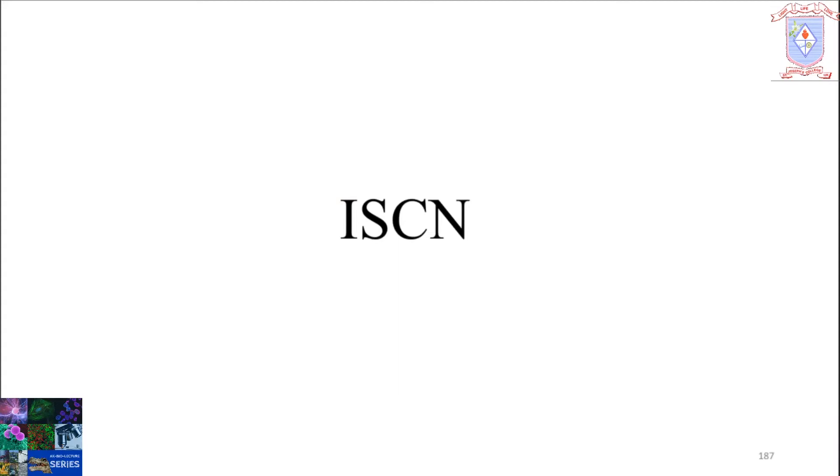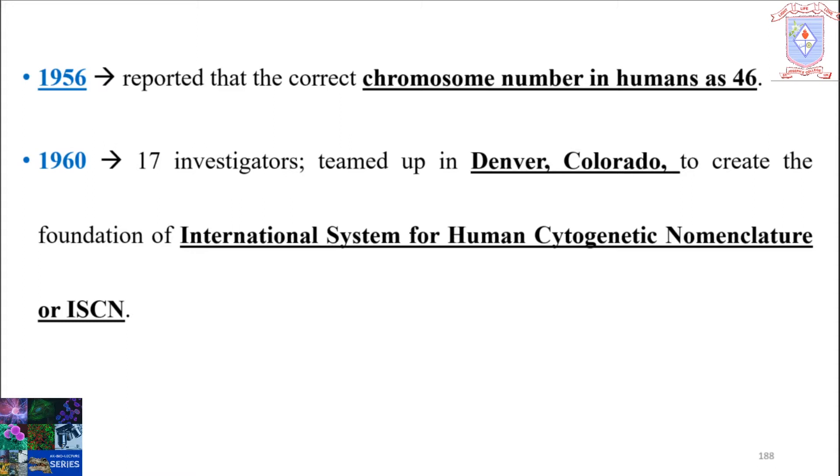Welcome all to AK Bio Lecture Series. Science is about generating, interpreting, and communicating information. In this lecture, we are going to discuss an international organization for chromosomal nomenclature named ISCN. In 1956, it was reported that the correct chromosome number in humans is 46.